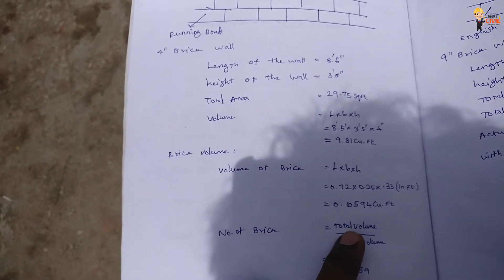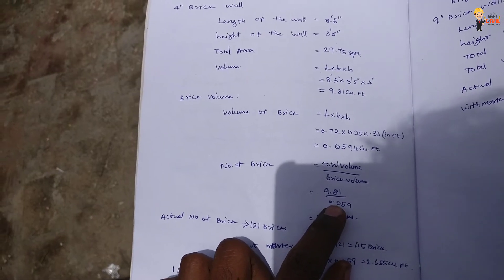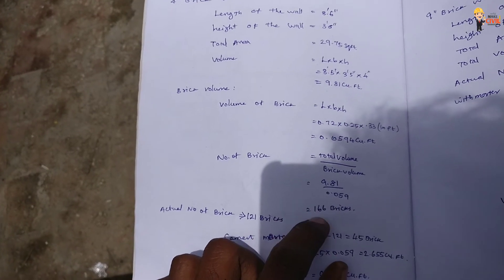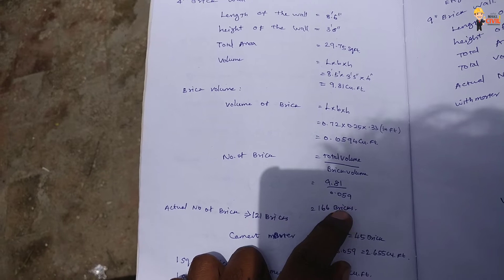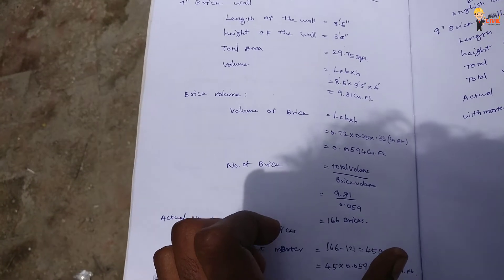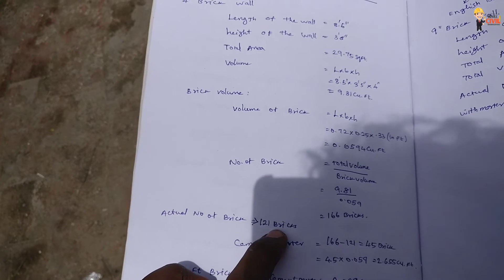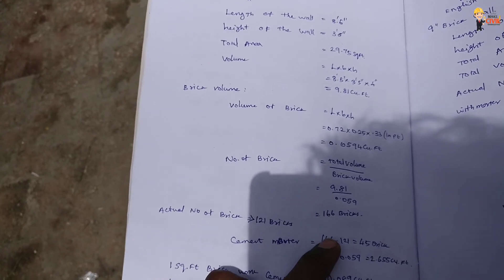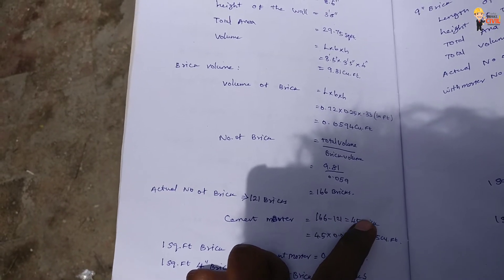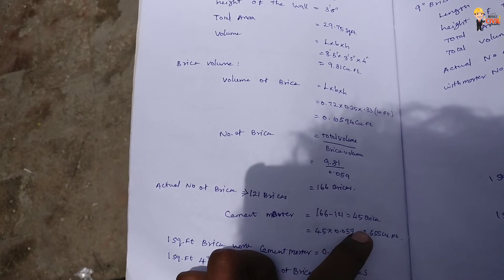The number of bricks is calculated as: total wall volume divided by brick volume. The total volume is 9.8, and the brick volume is 0.059 cubic feet. Multiplying these gives approximately 150 to 323 bricks. This is the total number of bricks required, calculated from the volume of bricks at 50 per unit.